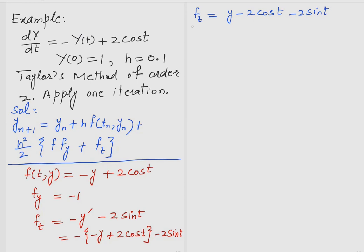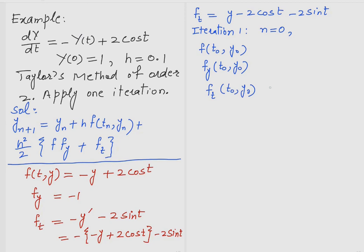For iteration 1, we use n=0, so we need the values at t_0 and y_0. We compute f(t_0, y_0), f_y(t_0, y_0), and f_t(t_0, y_0). Since t_0 = 0 and y_0 = 1, we evaluate all expressions at these values.